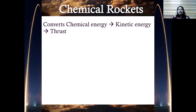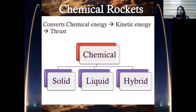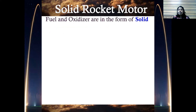A chemical rocket converts chemical energy into kinetic energy and thus produces thrust. Chemical rockets can be further classified as solid, liquid, or hybrid, depending on the type of propellant used. Propellant is the mixture of fuel and oxidizer together. Depending on what form of fuel and oxidizer you use, the rocket is named solid, liquid, or hybrid.